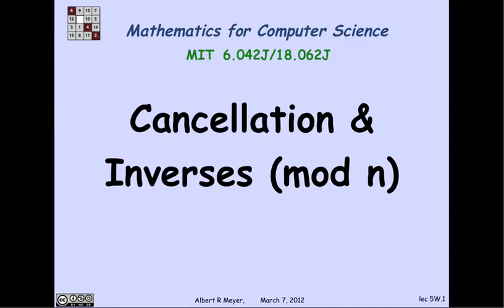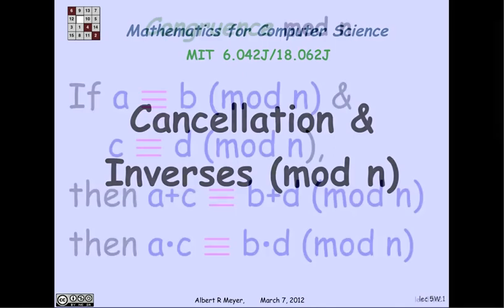So now we come to the place where arithmetic modulo n, or remainder arithmetic, starts to be a little bit different. And that involves taking inverses and canceling. Let's look at that.